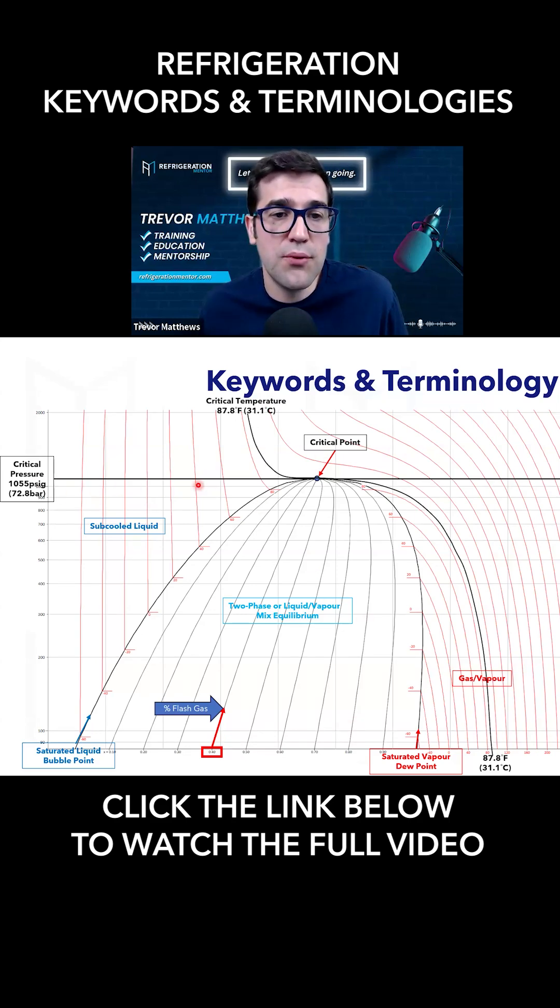But we also have a critical pressure line. So you need to be above both of these. When you're above both of these, that's when you are in supercritical or your system's in transcritical. If you're not above both the critical pressure and critical temperature, you're not going to be in supercritical.